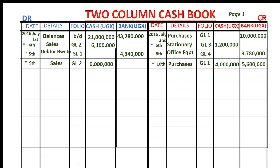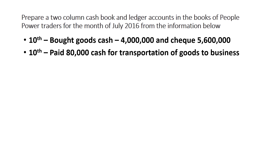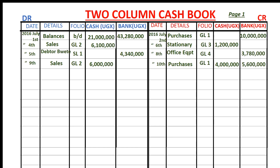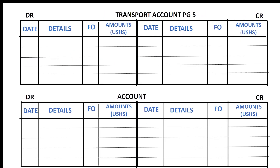Still on 10th, paid $80,000 cash for transportation of goods to the business. Cash reduces, so we credit the cash book by putting $80,000 in the cash column on the credit side. The other item affected is transport expense, found in the general ledger. All expenses when incurred are debited — increases in expenses are debited — so we debit the transport account with $80,000. Cash is found in the cash book on page one.